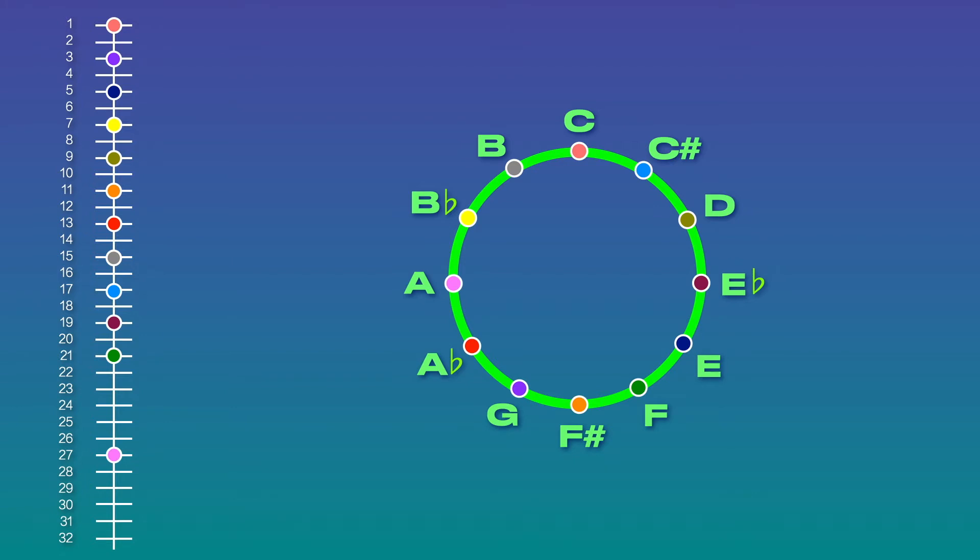What you'll notice is that every note in the scale correlates to a nice, evenly spaced harmonic on the left, except for one. The 27th harmonic that generates the note of A is offset from the rest of the scale, sitting much lower on the harmonic series than all the other notes.